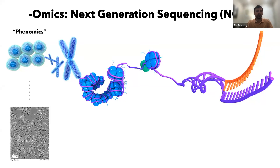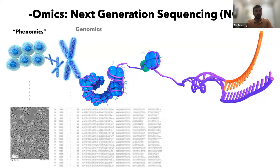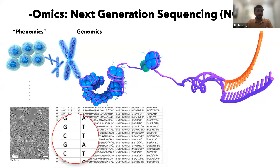We can also talk about genomic data — the sequences of nucleotides and amino acids, typically referred to as genomic data.